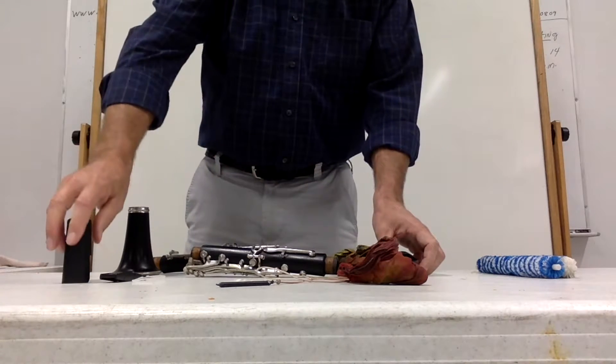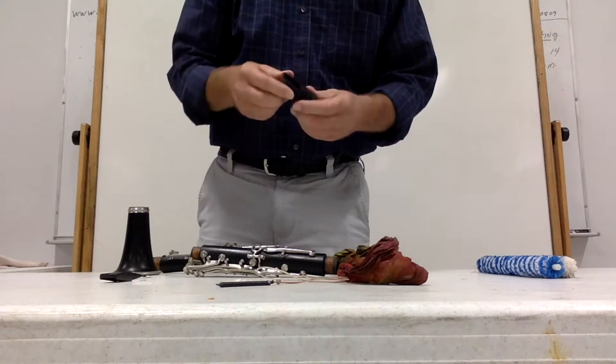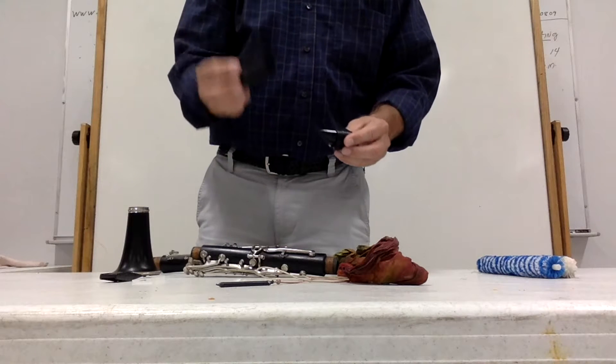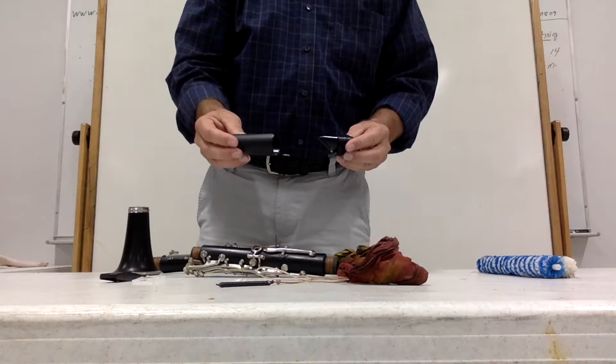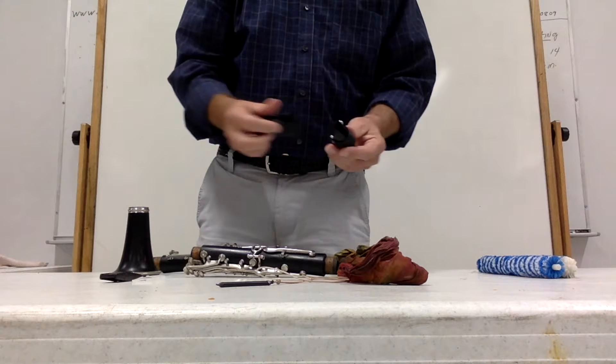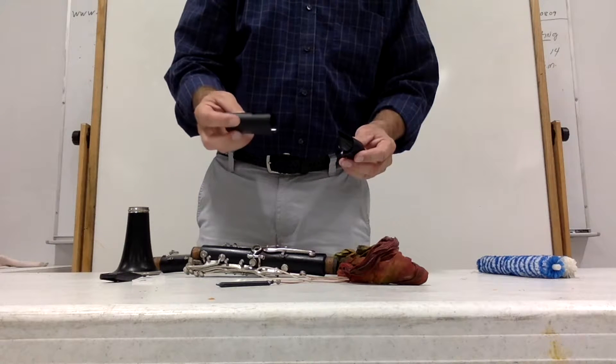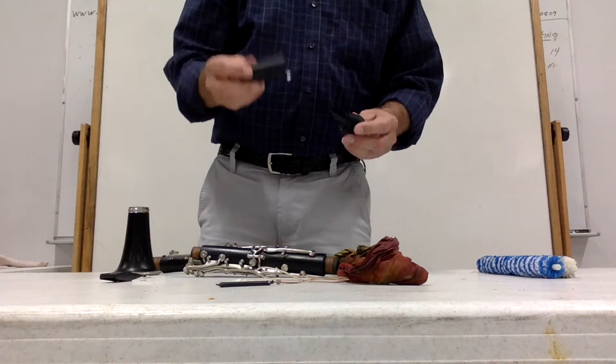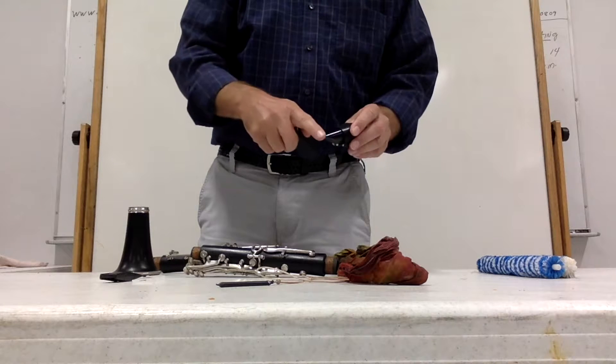Once you're done with those two sections you can go ahead and put up the mouthpiece. The mouthpiece always has a cap that comes with it. If you have a ligature like this it has a specific type of cap that comes with it. Putting the cap on it protects the mouthpiece.